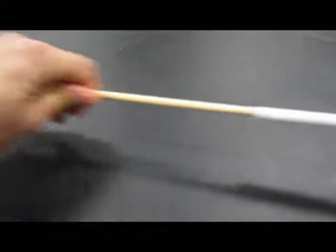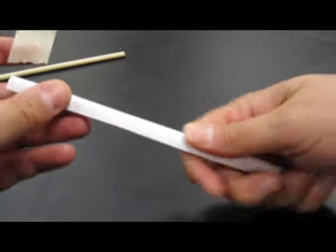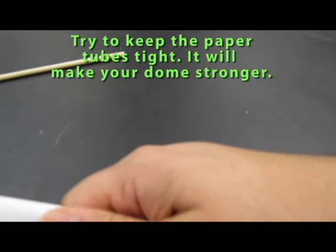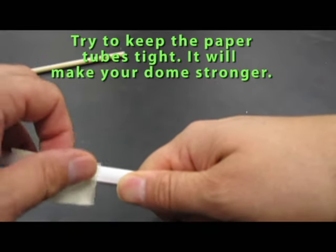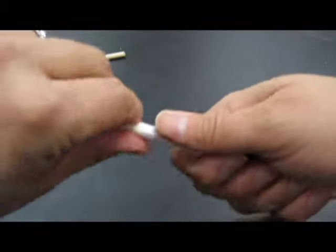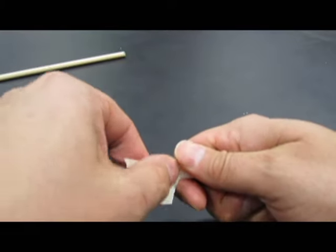I'm going to pull the tube out, and before it completely unrolls on me, right here at this seam, I'm going to tape that down. And I'm going to put about three pieces of tape on there, one at the end, this end, one at the middle, and then one at the other end.